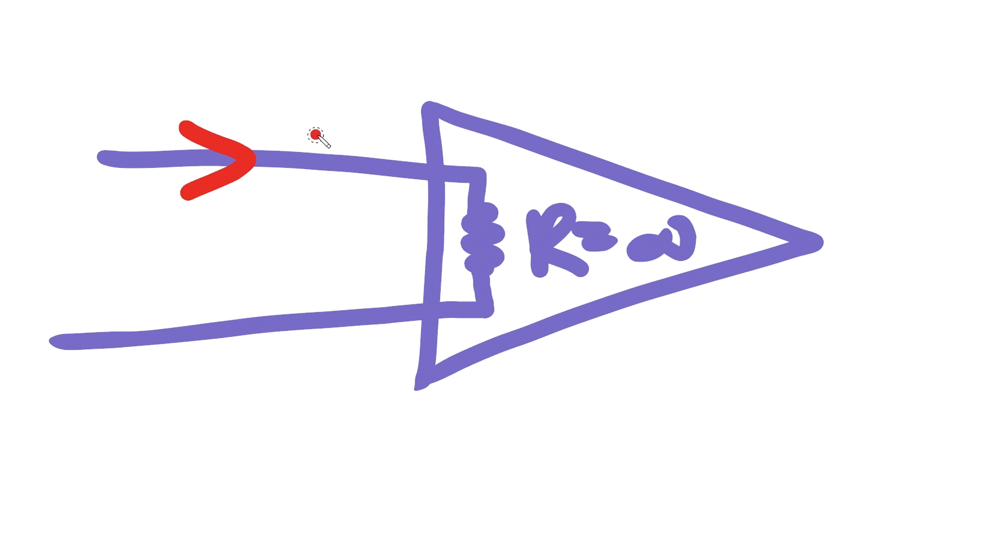So the op-amp can be modeled as a large resistor and a dependent voltage source. The resistor just says no electrical current can go into the device, a fundamental property of the op-amp.